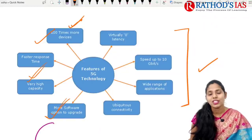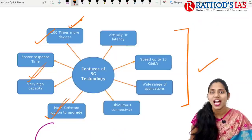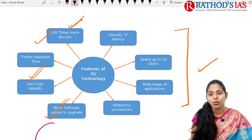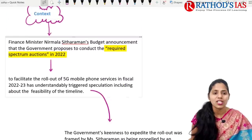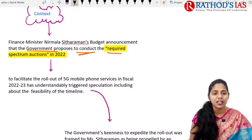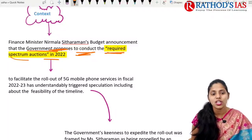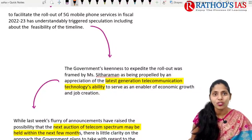5G connectivity will be ubiquitous — present everywhere — which will help address connectivity problems in rural areas. It enables a wide range of applications with speeds up to 10 gigabits per second and virtually zero latency. In the recent budget, the Finance Minister announced that the government proposes to conduct required spectrum auctions in 2022 and facilitate the rollout of 5G services in fiscal year 2022-23.